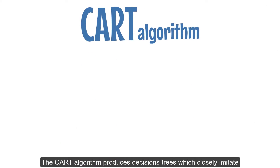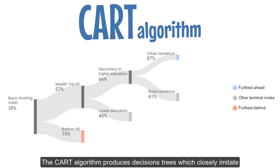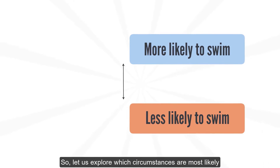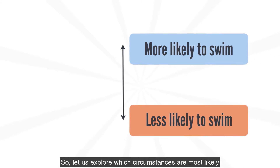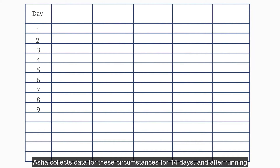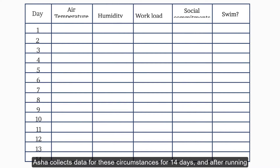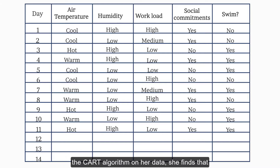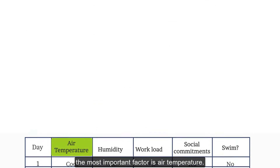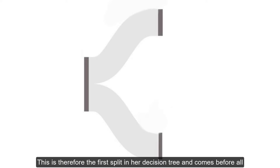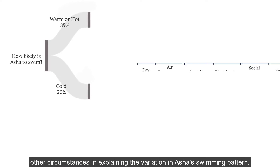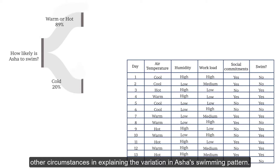The CART algorithm produces decision trees which closely imitate how most people make decisions. Let us explore which circumstances are most likely to influence Asha's decision to go swimming. Asha collects data for these circumstances for 14 days, and after running the CART algorithm on her data, she finds that the most important factor is air temperature. This is therefore the first split in her decision tree, and comes before all other circumstances in explaining the variation in Asha's swimming pattern.